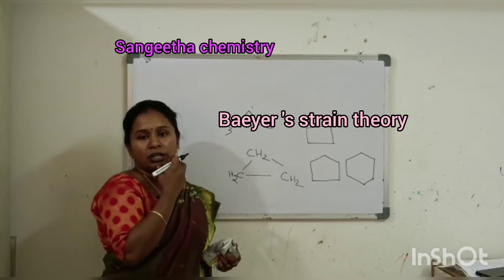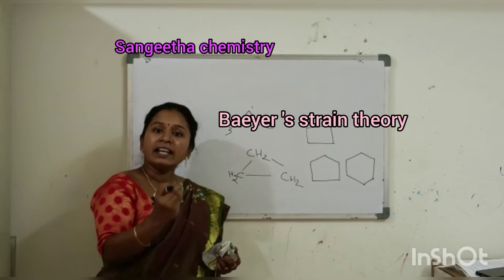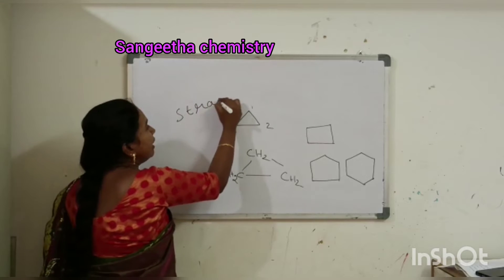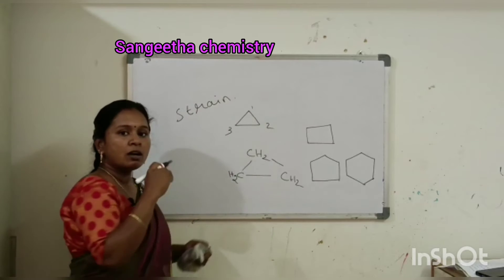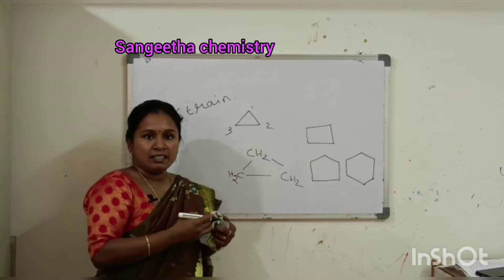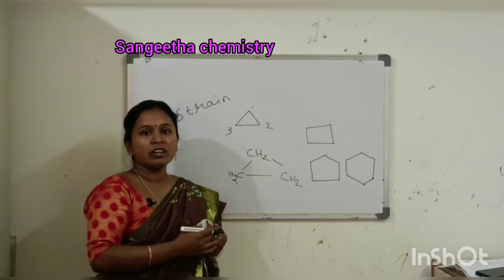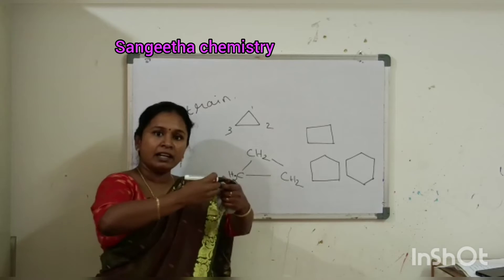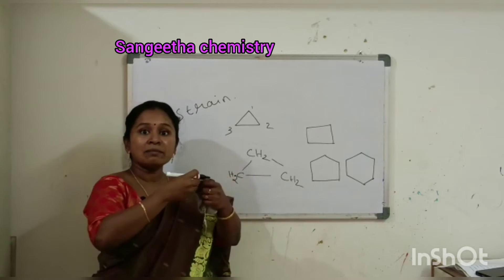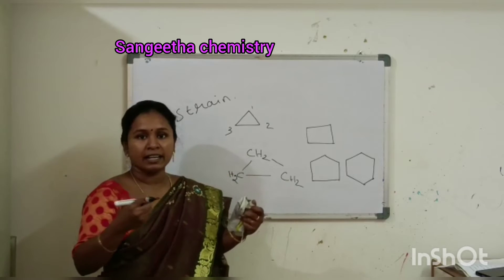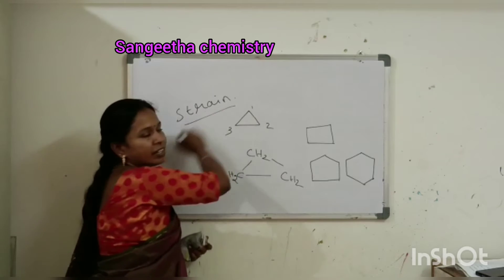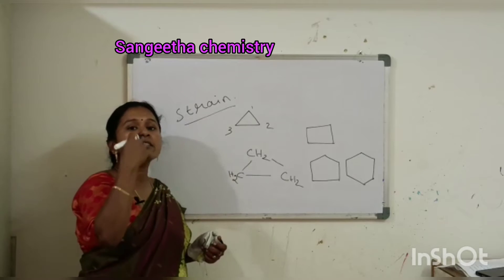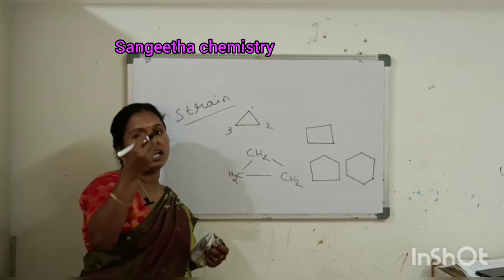What is it? Bayer strain theory. So what is the meaning of strain? Some strain is there — for example, a rubber band has a strain; we are able to expand it, so it has some tension, some pressure. That is called strain. So Bayer is a scientist — Adolf Bayer — who is explaining the stability of cycloalkanes.